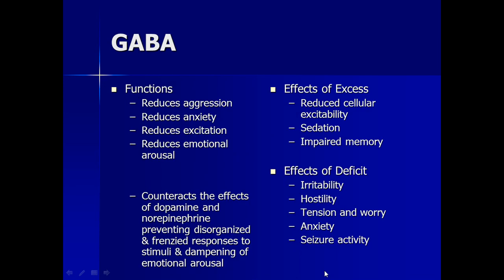GABA's primary role is to inhibit action potentials in neurons, and by doing that it reduces anxiety. As many of you know, Valium, Xanax, and benzodiazepines work by targeting GABA receptors in order to decrease anxiety. GABA is the principal inhibitory neurotransmitter in the central nervous system and represents about 25% of the neurotransmitters in the brain. Some studies have found that the cognitive deficits in schizophrenia may be related to both GABA and glutamate frontal circuit dysfunction.